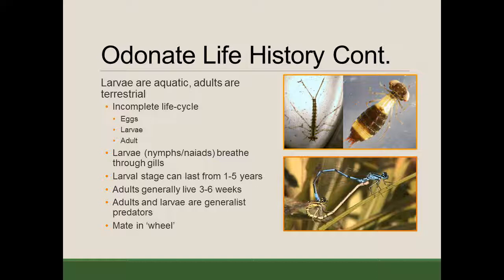Another interesting aspect is that they have what we call a mating wheel. You see the image on the bottom is of a dragonfly couple in the mating wheel — it doesn't actually form a perfect circle, it's almost more of a heart shape. The male has claspers at the end of its abdomen and grasps the female behind her head. That then prompts her to bring her abdomen up towards his body, and he can deposit sperm — that's how the eggs are fertilized.